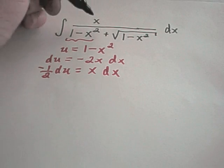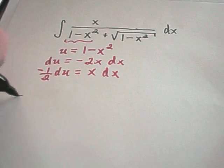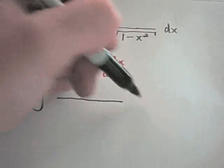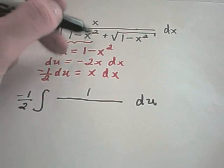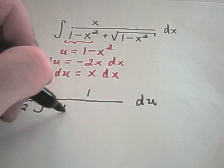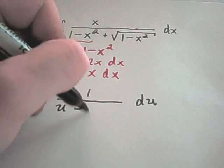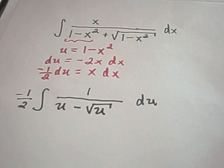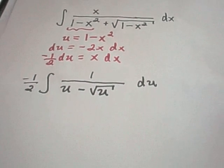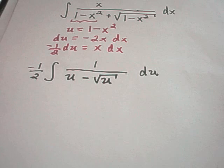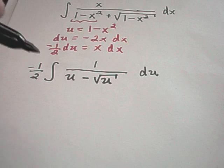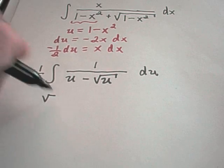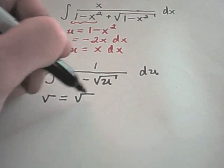So now I need to rewrite my problem. So the x dx is going to be replaced with a negative 1 half. I just pull that out front, and then I'll put my du over to the side. Well, 1 minus x squared is just u. Well, I also have a 1 minus x squared under the square root. So now I'm left with this problem 1 over u minus square root of u. You can actually do another substitution. Since we've already used u, I don't want to use that again.